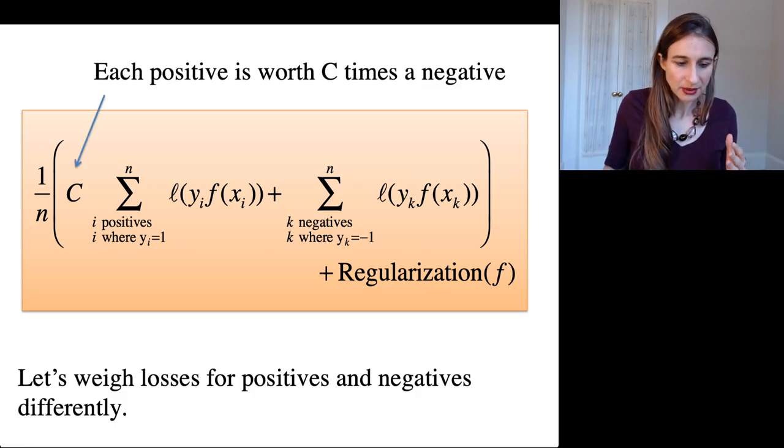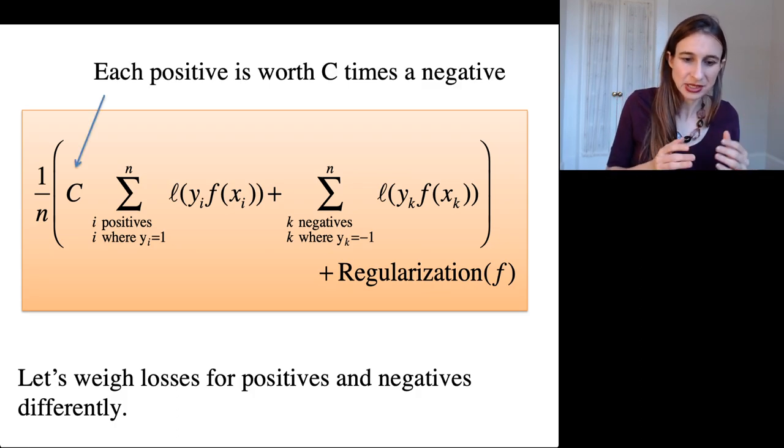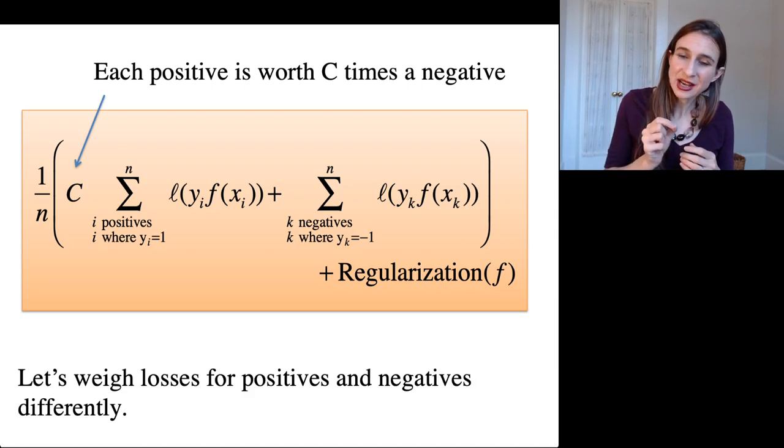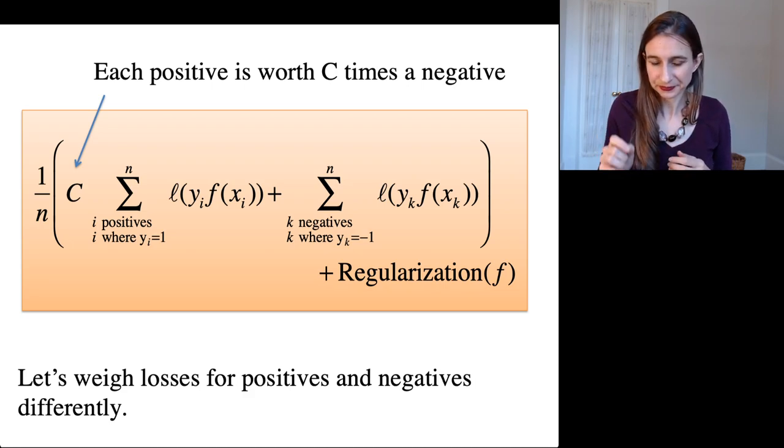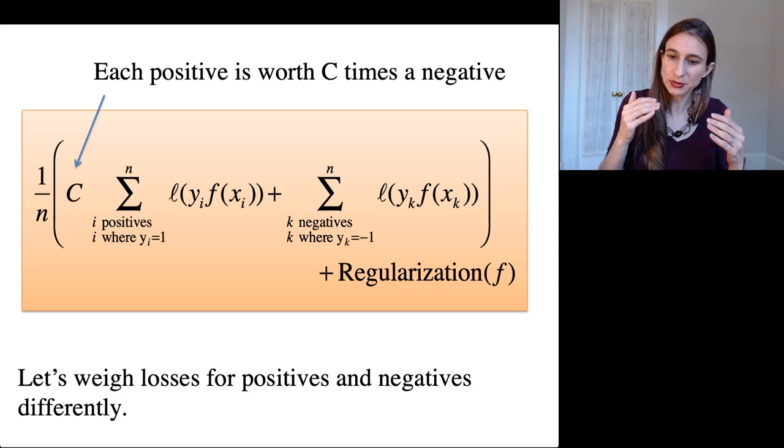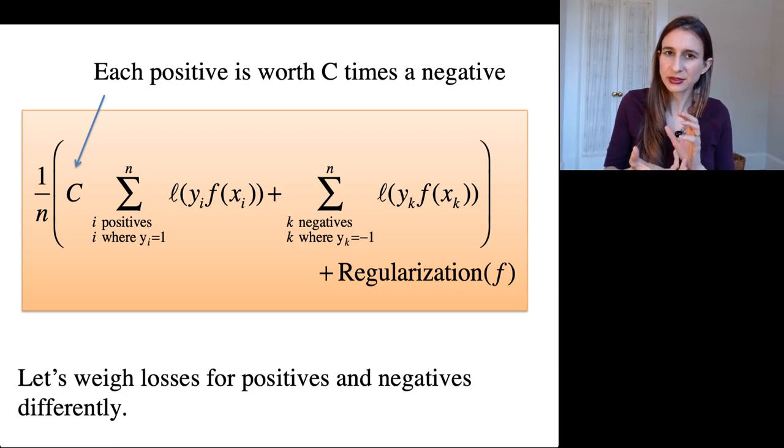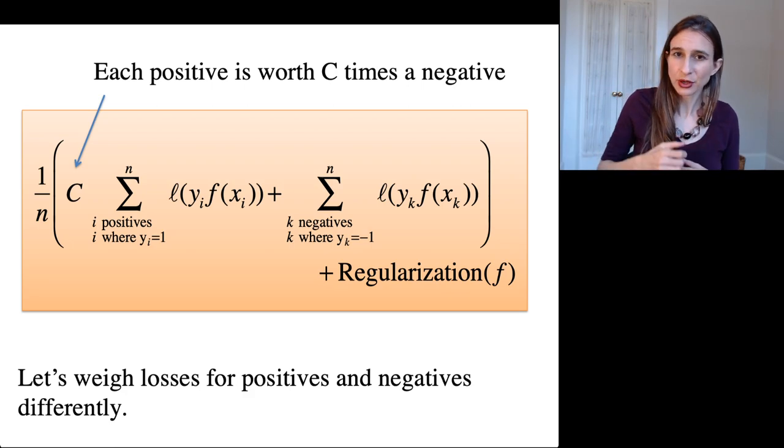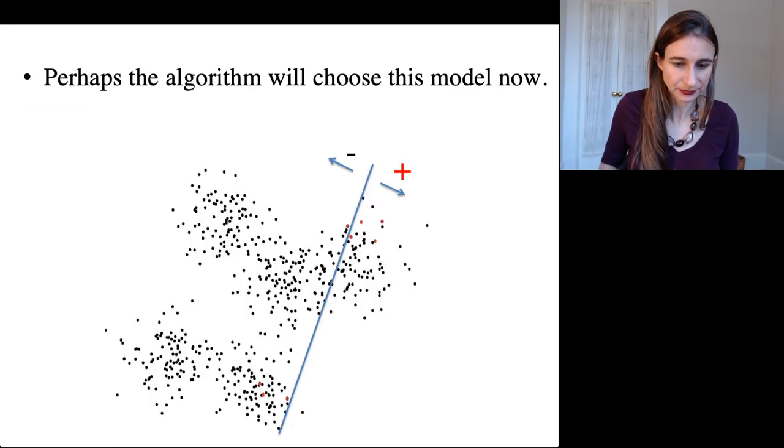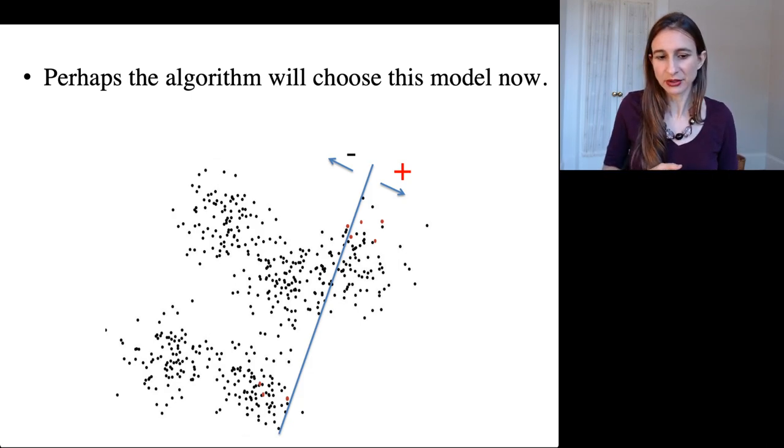So here, each positive example is worth C times a negative example. So when you minimize this criteria, you're actually weighing each positive as if it had the weight of C times a negative. So you might misclassify a whole bunch of negatives in order to get one positive right. Okay, so hopefully the algorithm will then choose that particular model now.